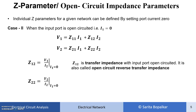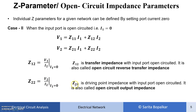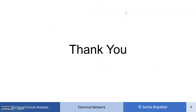These are the Z parameters and how to find them — by open-circuiting the output port and input port respectively. That is why the Z parameter is called the open circuit impedance parameter. Thank you.